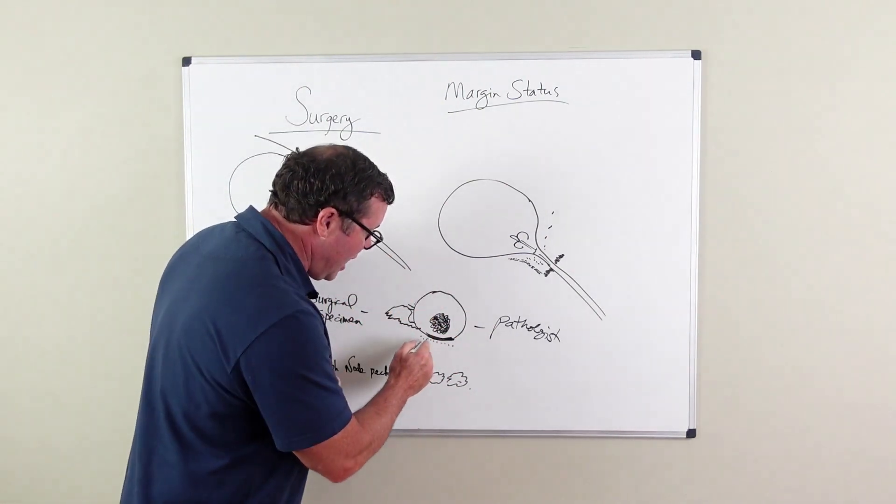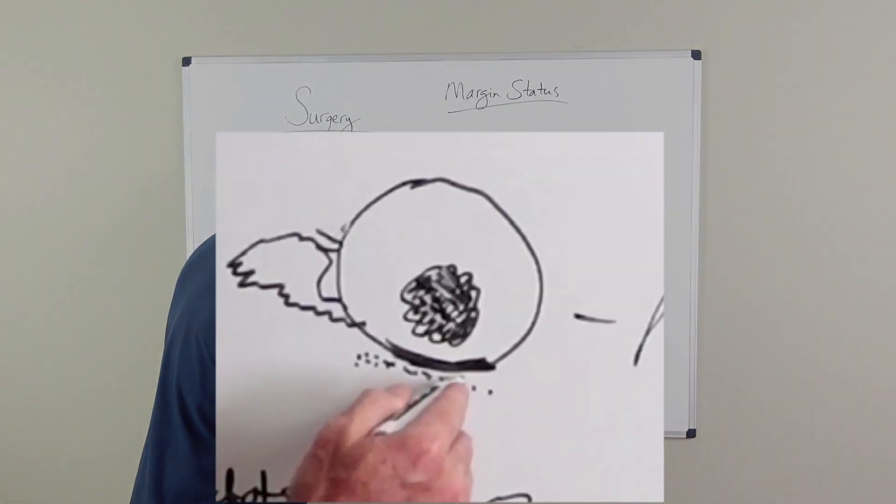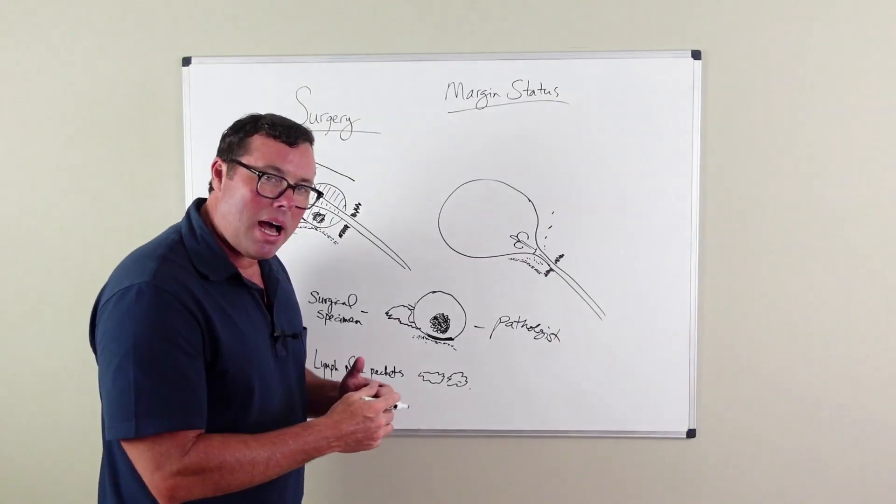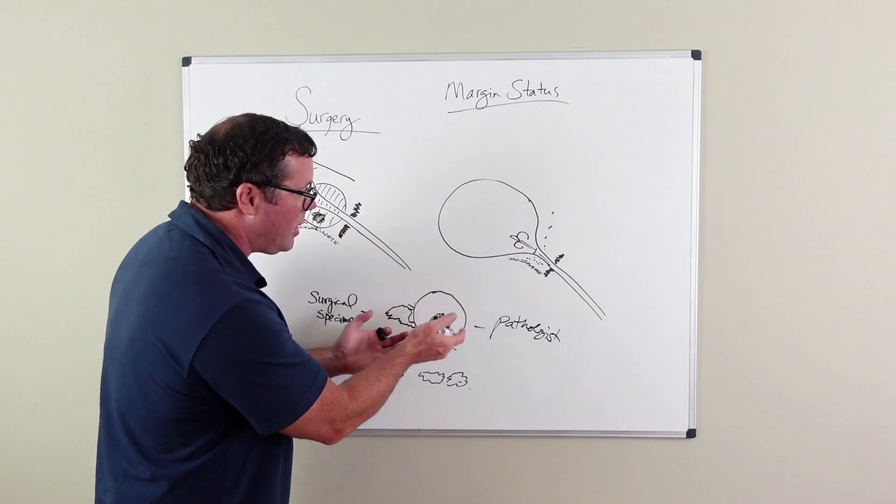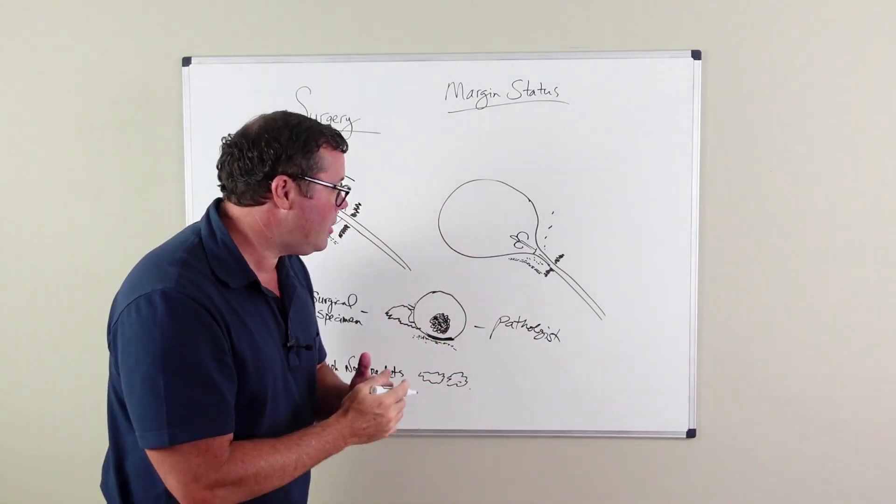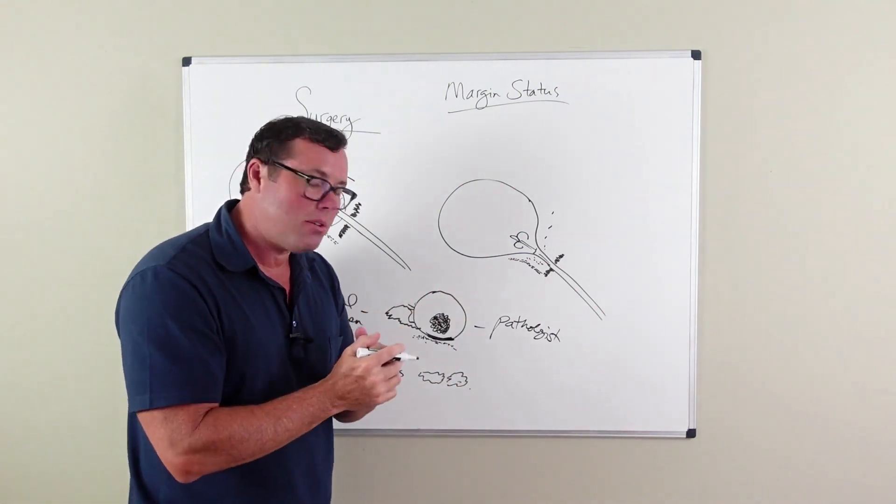And is it possible that there may be cells, cancerous cells left in the body, either locally at the prostate or elsewhere in the body along the lymph node chains or the bones that wasn't known prior to the surgery?